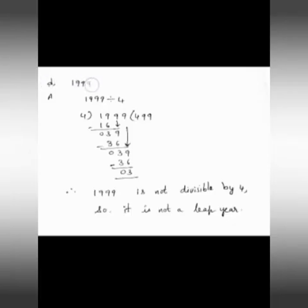D1. We have to check if the year 1999 is a leap year or not. First of all, we have to divide 1999 by 4.